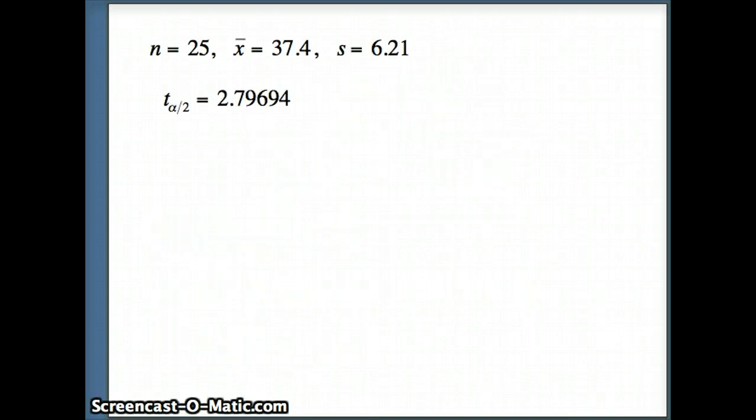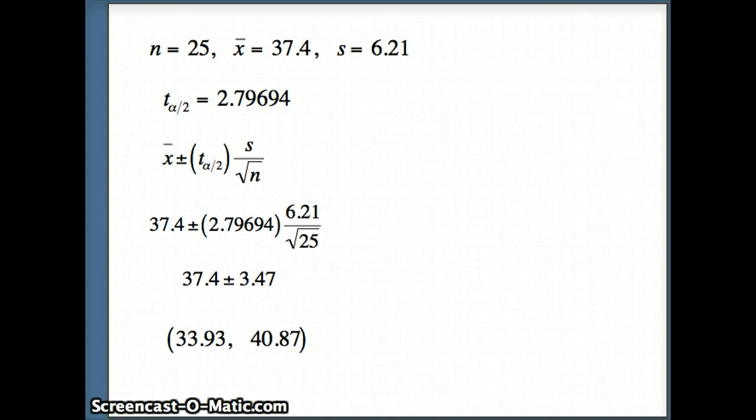So there's all of our information. Plugging it into our formula, x bar plus or minus t alpha by 2 times s over root n. x bar, 37.4, plus or minus t alpha by 2, 2.79, times s, 6.21 over root n over root 25. We're going to simplify this part first. Putting all that together, what do we get? We get 37.4 plus or minus 3.47, which is going to give us a confidence interval of 33.93 to 40.87.